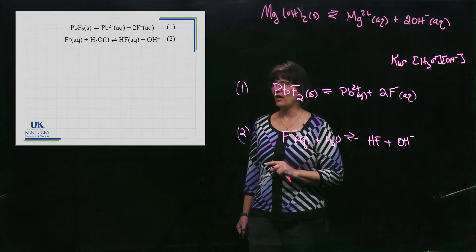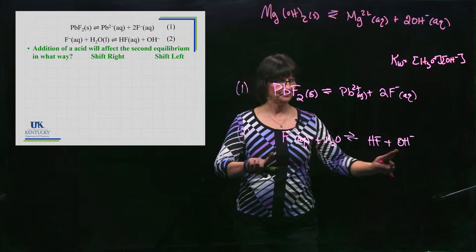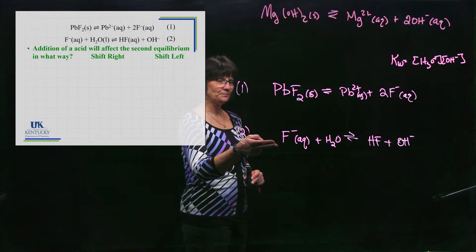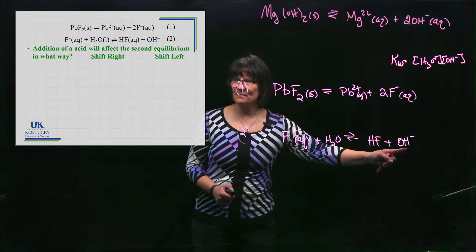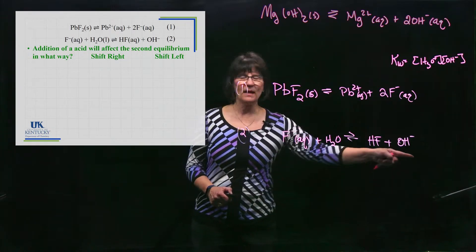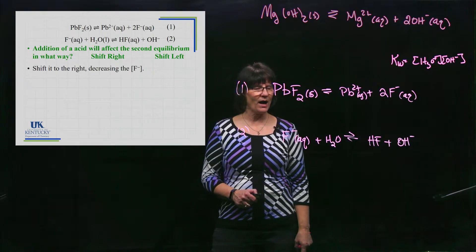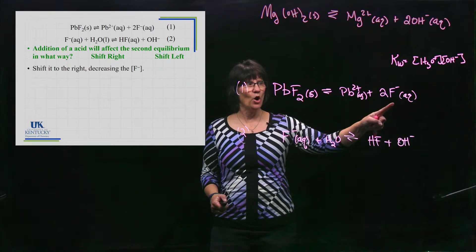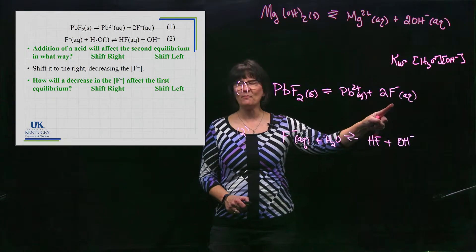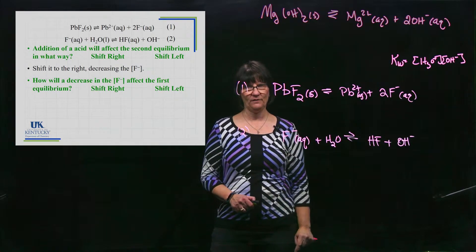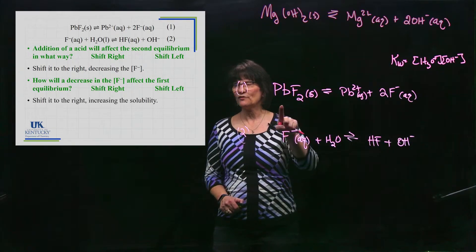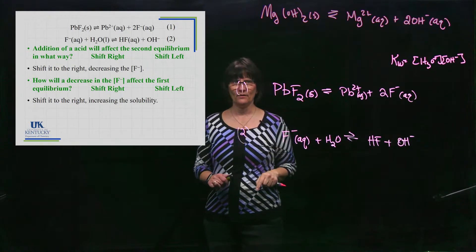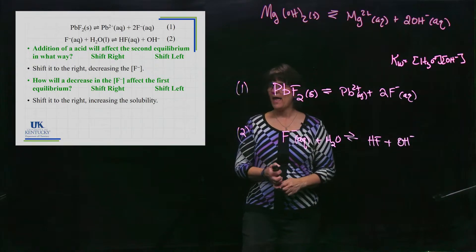Now let's add an acid. Adding acid decreases OH⁻, which shifts the second equilibrium to the right, decreasing F⁻ in solution. With less F⁻, the first equilibrium shifts to the right to make more, dissolving more solid. So adding an acid increases the solubility of lead fluoride.